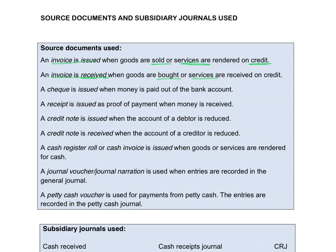A cheque is issued when we pay money out of the bank account. This can also be an electronic transfer. A receipt is issued when someone pays money to the business as proof that the payment was made.